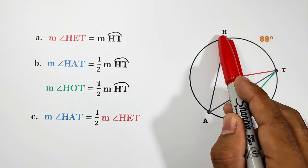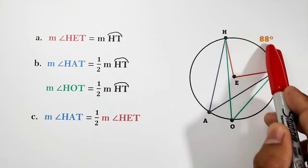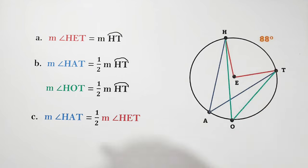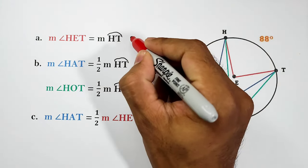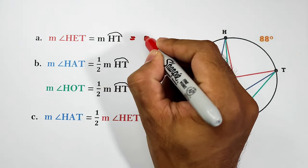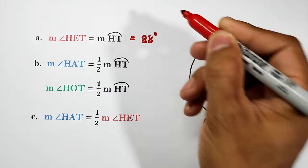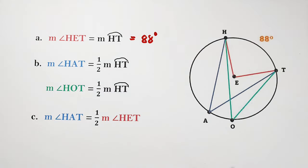Since the arc is 88 degrees, therefore angle HET is also equal to 88 degrees. They have the same measure.